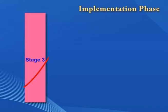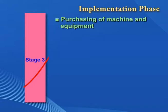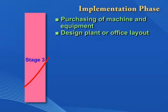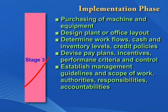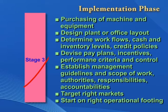In the implementation phase, there are seven critical aspects: one, purchasing the right machinery and equipment; two, designing the best plant or office layout; three, determining proper workflows, cash and inventory levels, and credit policies; four, devising pay plans, incentive schemes, performance criteria, and control mechanisms; five, establishing sound management guidelines and scope of work, authorities, responsibilities, and accountabilities; six, targeting the right markets; and seven, starting on the right operational footing.